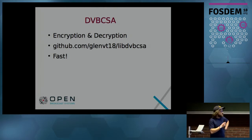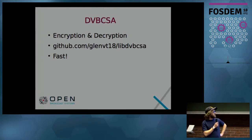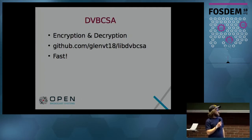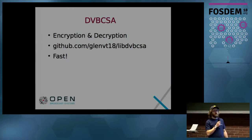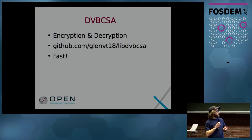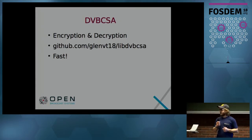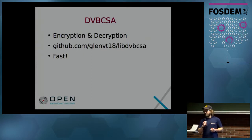We added DVB-CSA, which is an encryption system for satellite — so for pay TV. You can do both sides: encryption and decryption. It's actually a fork; the original version came from VideoLAN. That contributor forked it and added SIMD, devising a bit-slicing implementation. It's very, very fast — a couple of gigabytes per second on modern hardware.